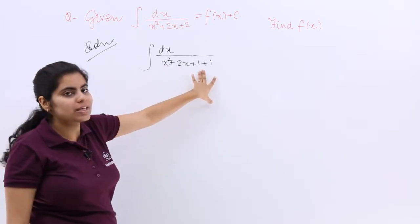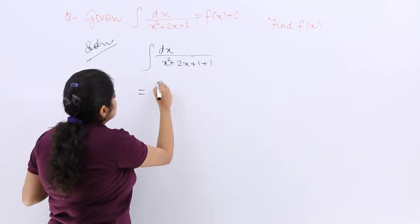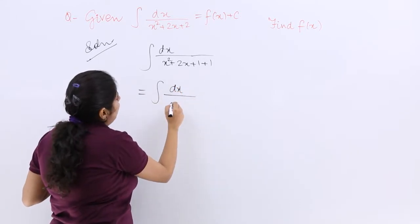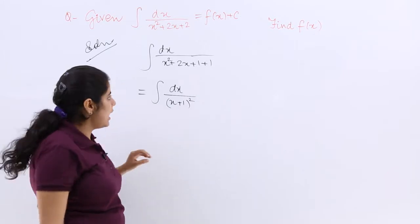Now what is x square plus 2x plus 1? It is nothing but x plus 1 whole square. So it is dx upon x plus 1 whole square.